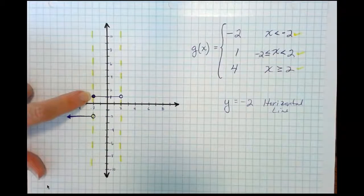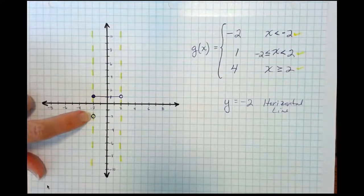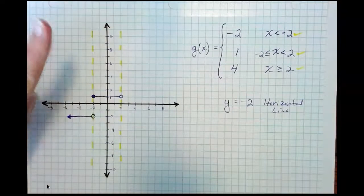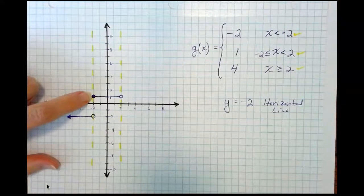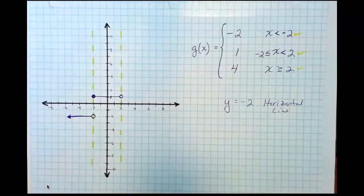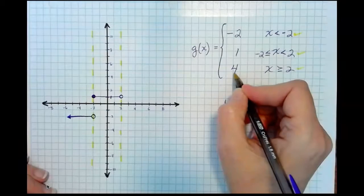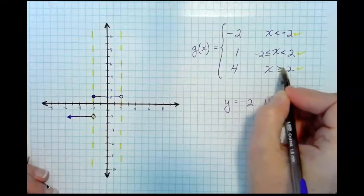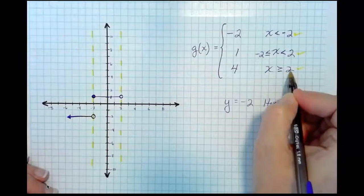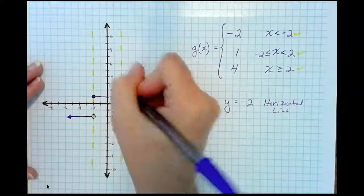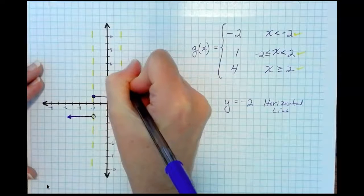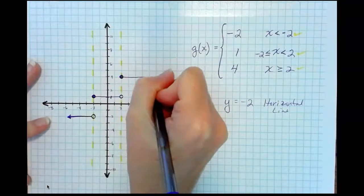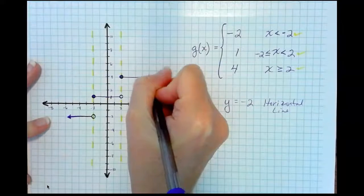Think about it. If this were close and this were close, would this pass the vertical line test? No. So, that's why if this one is closed, this one has to be open. Same thing here. Because our next function says g of x equals 4 when x is greater than or equal to 2. So, alright, at 2, we are equal to 4 and then the function takes off to the right.